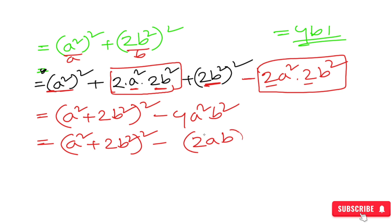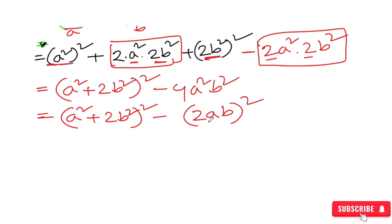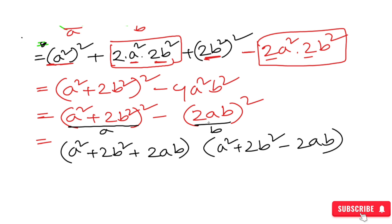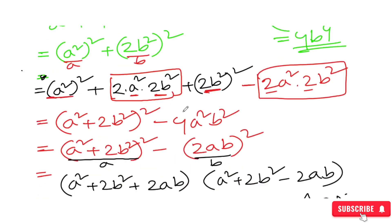a squared plus 2b squared, whereas ab. Here we are going to get the format: a squared plus a minus b, a squared plus 2b squared plus 2b squared. I think a minus b is a squared plus 2b squared minus 2ab. And then a plus b minus b — I think a minus b is the final answer.